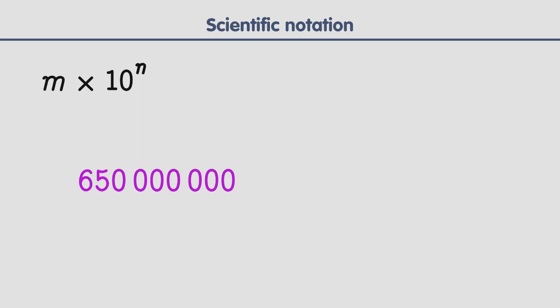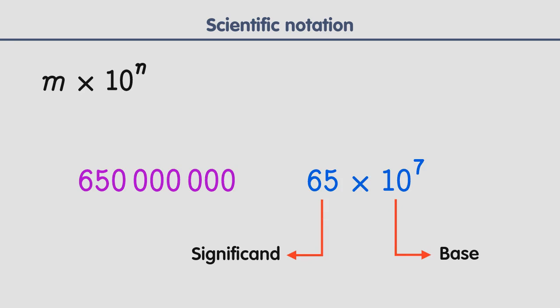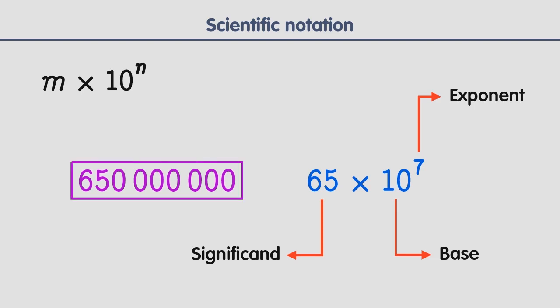A power of 10 is 10 multiplied by itself a certain number of times. For example, this number can be written in scientific notation like this, where 6.5 is called the significant or mantissa, 10 is the base, and 7 is the exponent. Scientific notation is useful when you want to write a number that has many zeros in a shorter form. Both 650 million and 65 times 10 raised to the power of 7 have the same value, just shown in different ways.